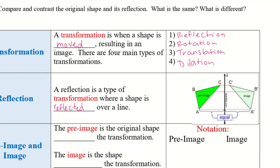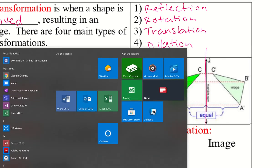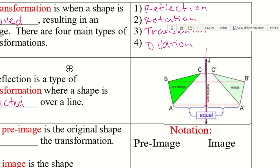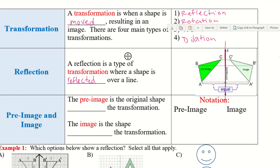If we take a look at this example, if we were to fold the paper right in half on line K, these two images will go right on top of each other perfectly, because it's a mirror image of one another. So we have a pre-image and an image. The pre-image is the original shape before the transformation, and the image is the shape after the transformation.